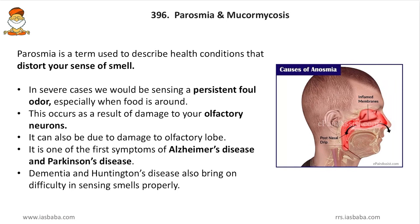Parosmia is a health condition that distorts your sense of smell. It is one of the preconditions of coronavirus — loss of smell and taste indicates possible coronavirus infection within a day or two. In severe cases, a persistent foul odor is sensed, especially around food. This occurs due to damage to olfactory neurons or the olfactory lobe of the brain. Parosmia is also one of the first symptoms of Alzheimer's disease and Parkinson's disease, and is a common symptom in almost all neural disorders.